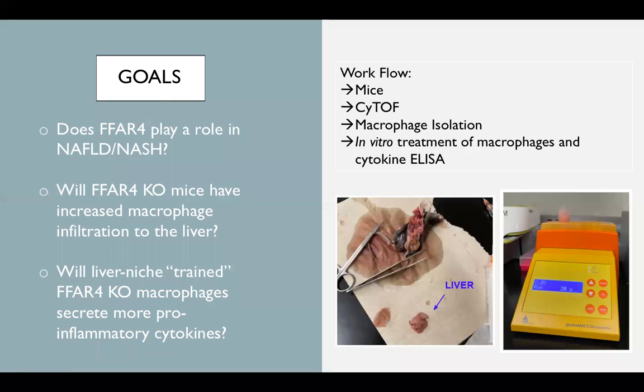Our goal for this project was to determine the role of FFAR4 in NAFLD/NASH by comparing macrophage activity in the livers of wild-type mice versus FFAR4 knockout mice. We want to figure out if FFAR4 knockout mice will have increased recruitment to the liver, and we also want to know how liver niche trained FFAR4 knockout macrophages will react in a fatty environment by measuring pro-inflammatory cytokine secretion.